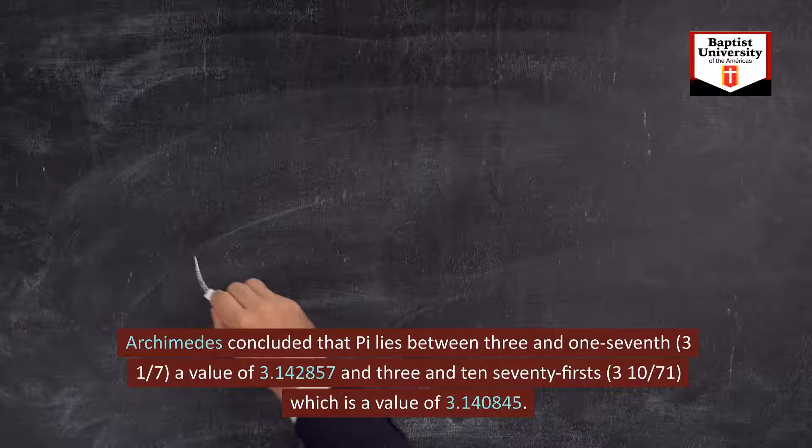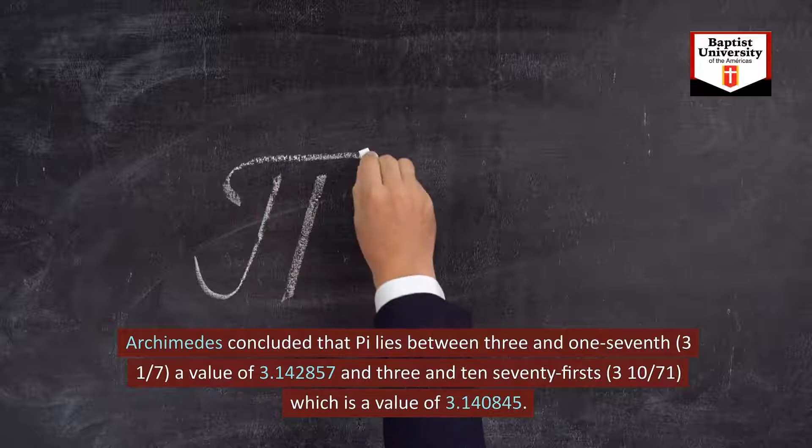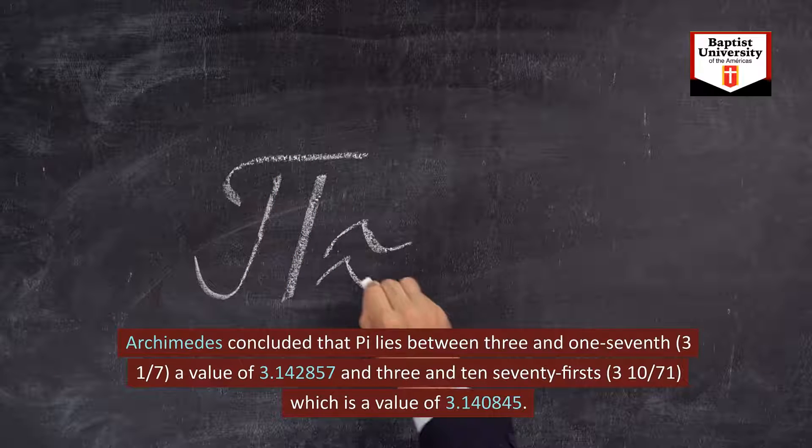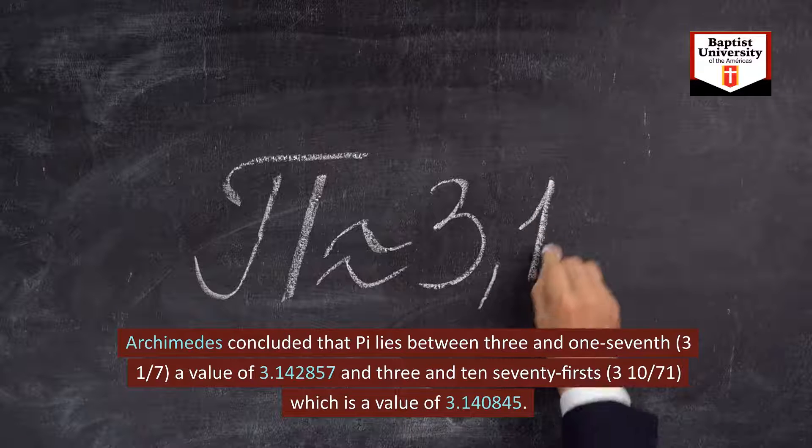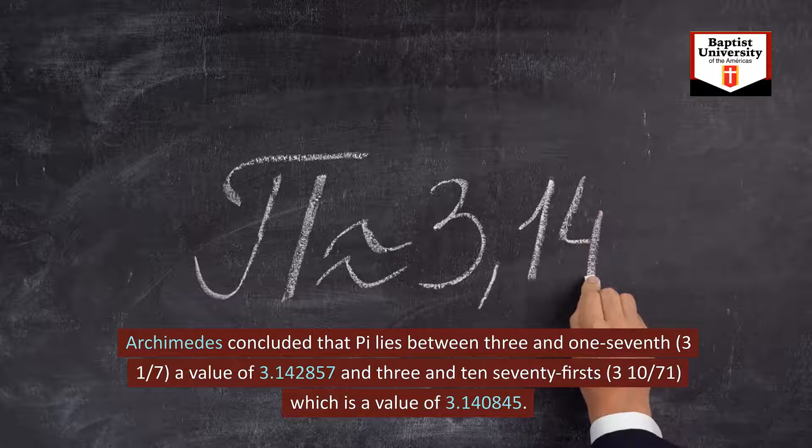Archimedes concluded that pi lies between 3 and 1/7, a value of 3.142857, and 3 and 10/71, which is a value of 3.140845.